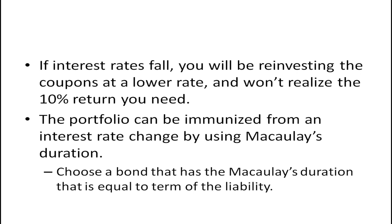It turns out that the portfolio can be immunized from an interest rate change by using Macaulay's duration. What we want to do is choose a bond that has a Macaulay's duration equal to the term of the liability. The reason the zero coupon bond works for immunizing the portfolio is that it has a Macaulay's duration equal to its term — equal to the term of the liability. So when we bought that zero coupon bond, it had a duration of 10 and a maturity of 10, and everything worked out just fine.